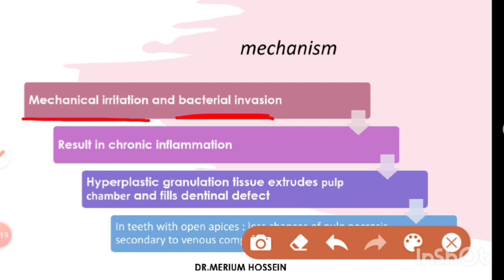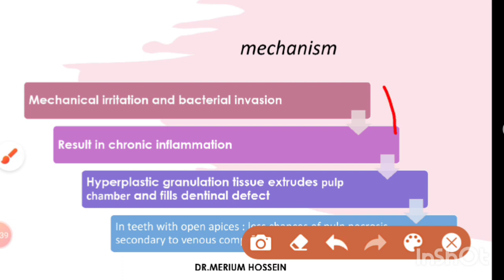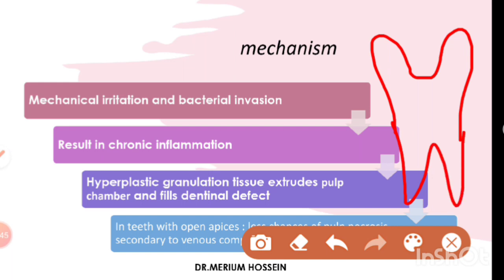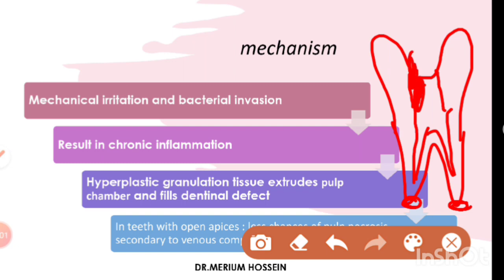This irritation causes chronic inflammation, and this chronic inflammation results in hyperplastic granulation tissue that extrudes from the pulp chamber and extends into the dentinal defect. When there is an increase in the size of pulp tissue — for example in a tooth with an open apex, a dentinal defect, and an exposed pulp chamber — the pulp tissue grows into the dentinal defect as a result of the hyperplastic change.